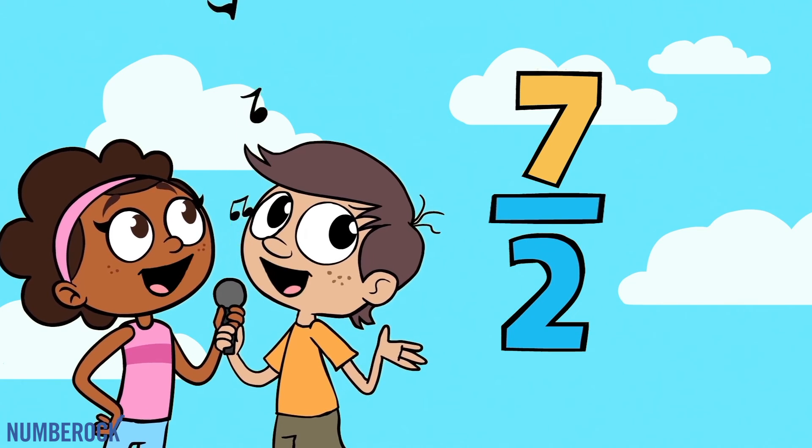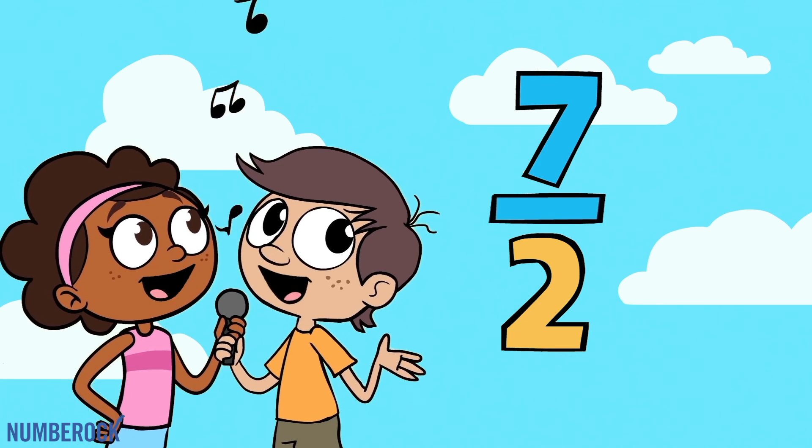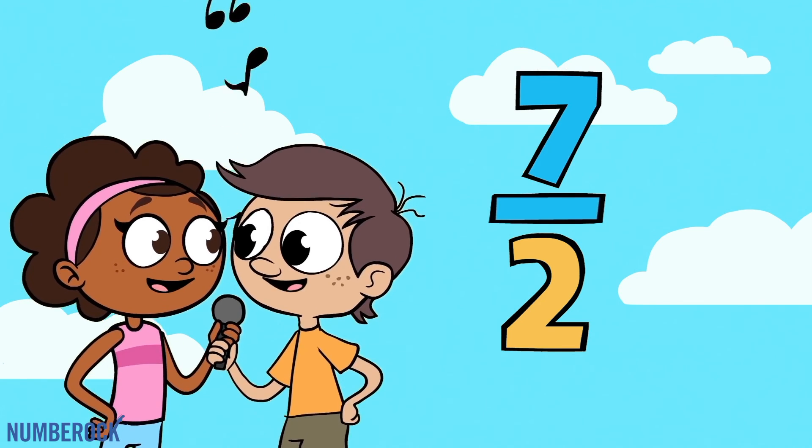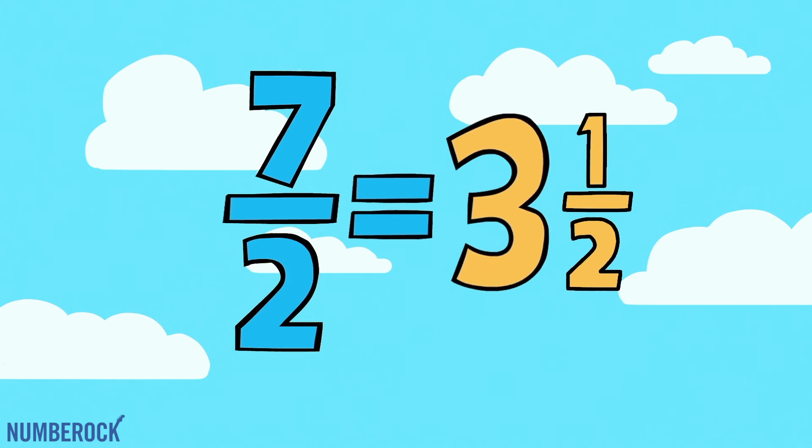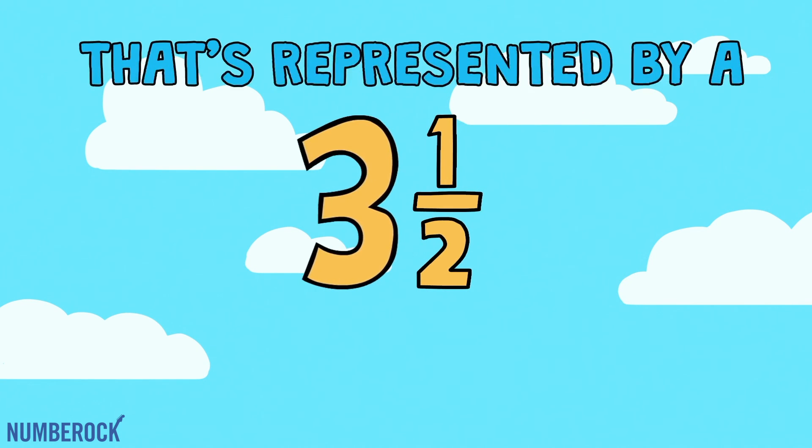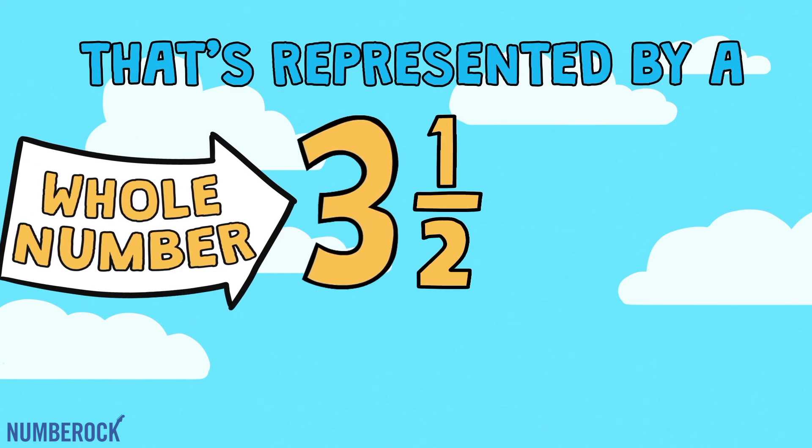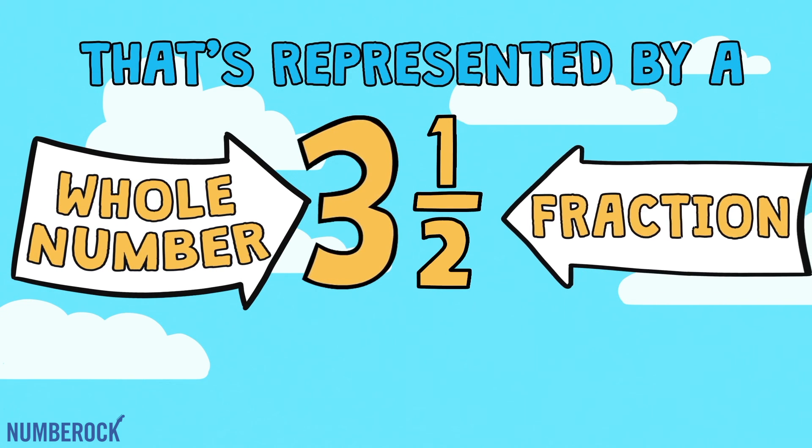An improper fraction has a numerator that's greater than or equal to the denominator. A mixed number has a value that is greater than one that's represented by a whole number and a fraction.